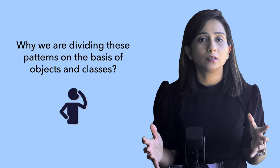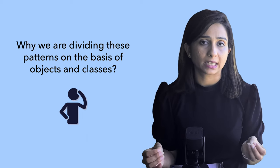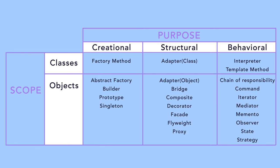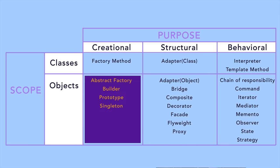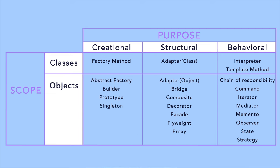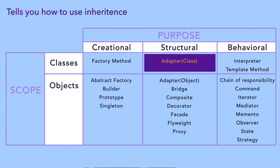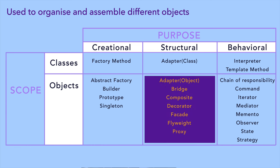Why are we dividing these patterns on the basis of objects and classes? If you look at the creational patterns which cater to classes, those patterns tell you how to create classes. If you talk about creational patterns categorized under objects, those patterns tell you how to instantiate objects for different classes. Similarly, the structural class patterns tell you how to use inheritance, and the structural object patterns tell you how to organize and assemble your objects.